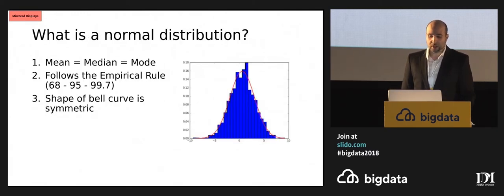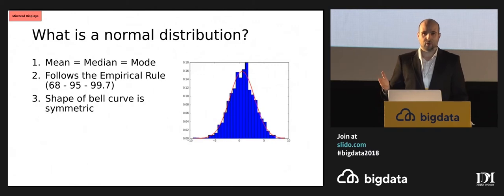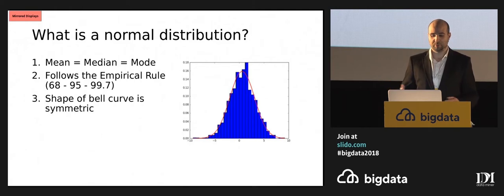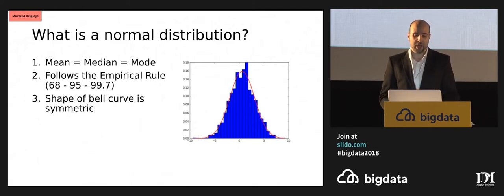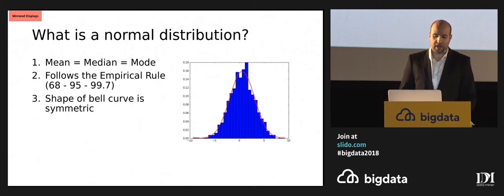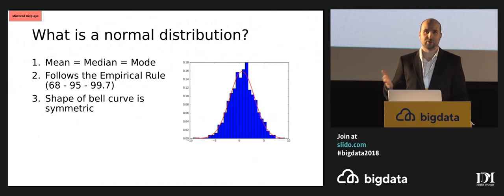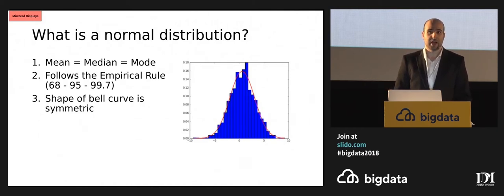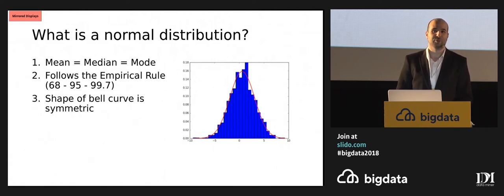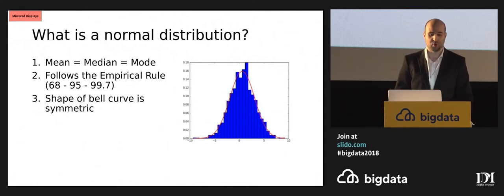I'm sure all of you have heard of a normal distribution — a distribution where the mean equals the median equals the mode, and we have a symmetric bell curve. Hands up if you think we need a normal distribution to run regression analysis. Hands up if you think we don't. Hands up if you haven't got a clue. I see more hands for the third option.